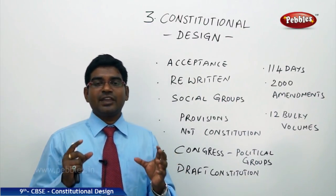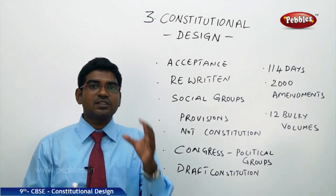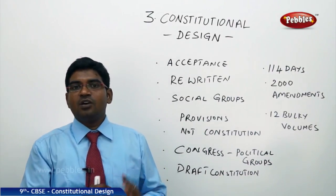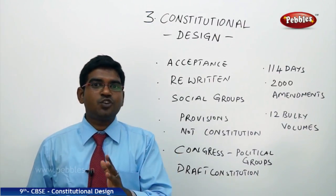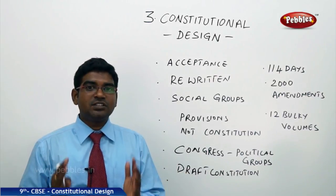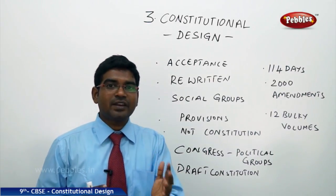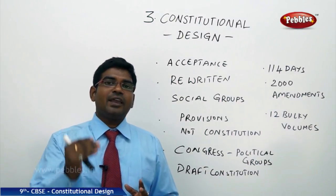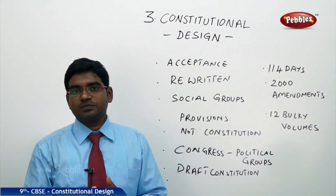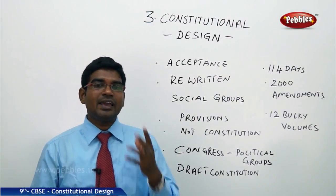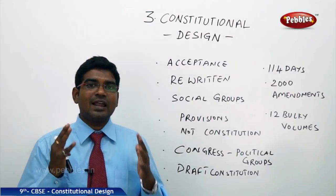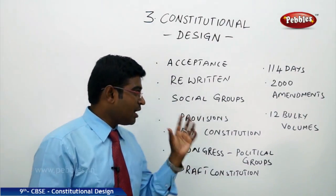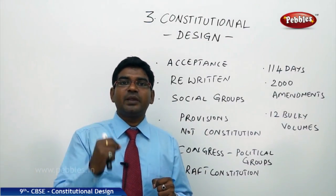This lengthiness is because the constitution explains every word and clause in detail — what action the government should take if a citizen performs a certain act, what state governments should do, what the union government should do, what a citizen should and should not do, what their rights and duties are. Everything is explained in detail. After drafting, the constitution was read again, and everyone was satisfied. The basic structure was fixed and every word was recorded.